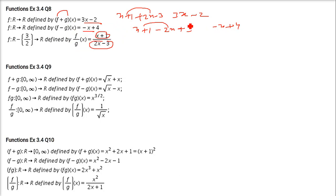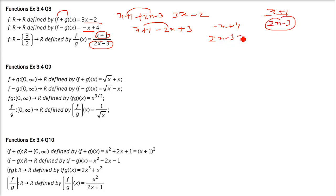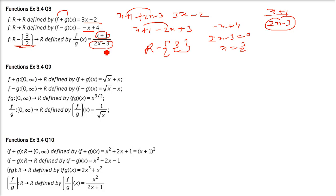For f by g: f(x)/g(x) = (x + 1)/(2x − 3). The only concern is that the denominator should not be 0. So 2x − 3 = 0 gives x = 3/2. Therefore the domain is all real numbers except 3/2. This is the domain of (x + 1)/(2x − 3).